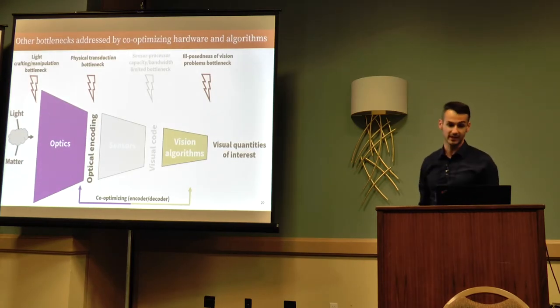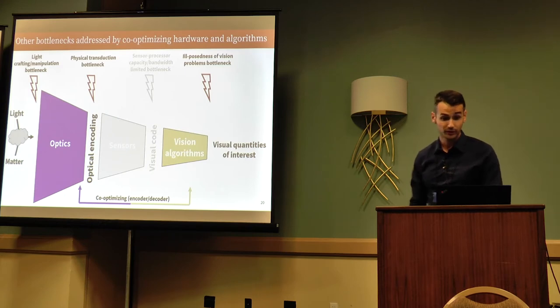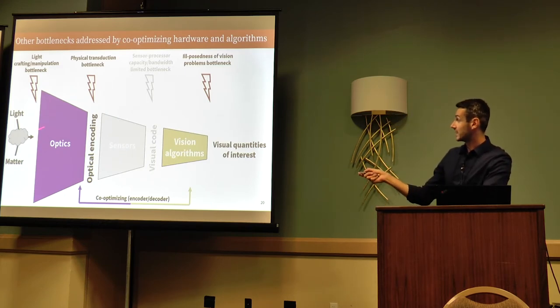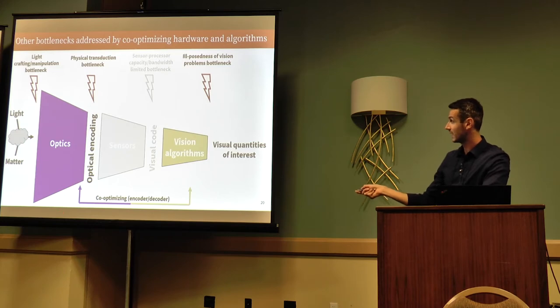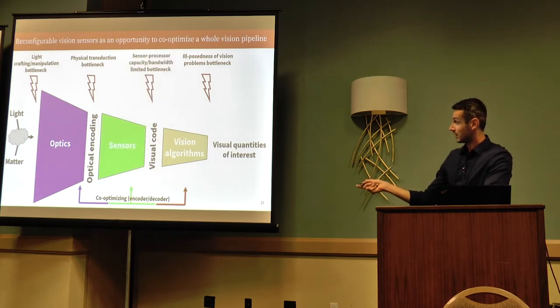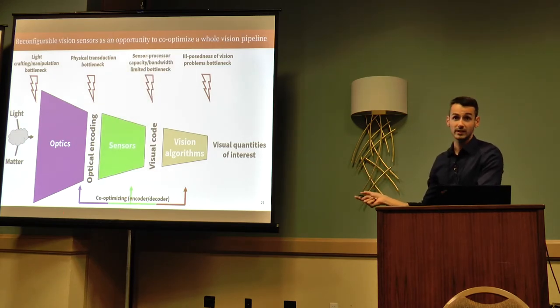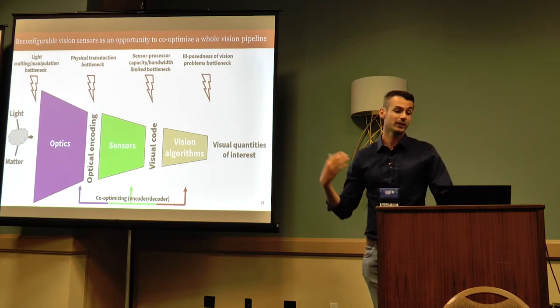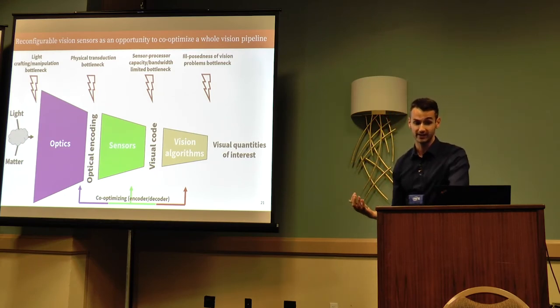So all in all to say, what I think we want to do in the future is the following. We want to take our optics, the vision algorithms, not only co-optimize vision algorithm optics, but also co-optimize the sensing strategy, and the few works I've shown in the beginning I think go in that direction, but we should go even further than that.